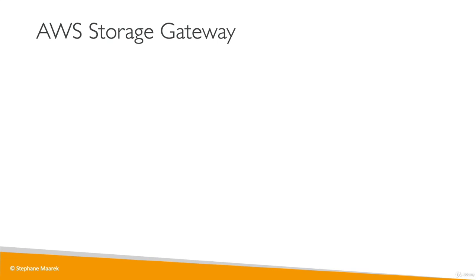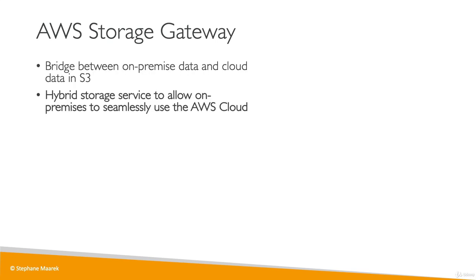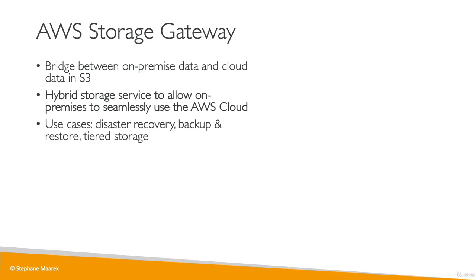The storage gateway is going to be bridging your on-premises data and cloud data in AWS. Your hybrid storage will allow your on-premises systems to seamlessly use the cloud to extend storage capability. This can be used for disaster recovery, backup and restore, or tiered storage. There are different types of storage gateway.